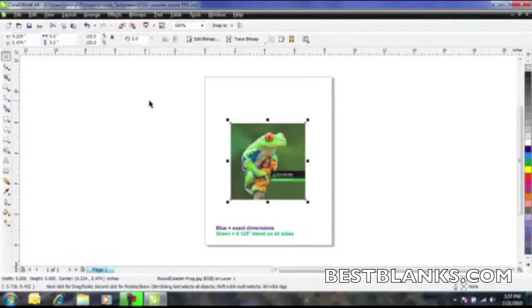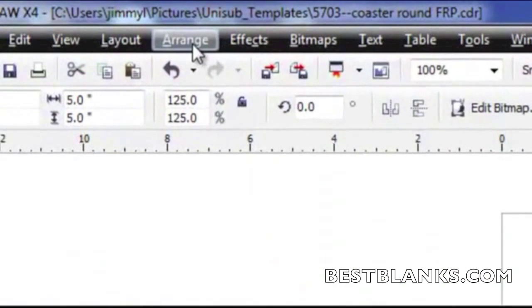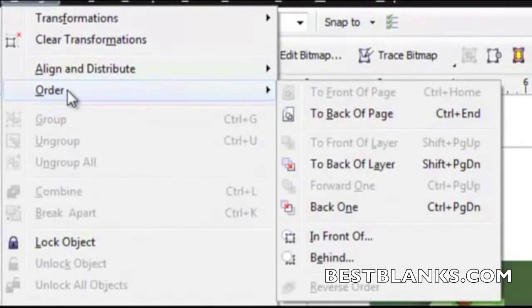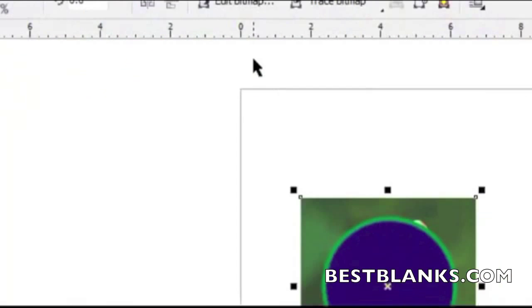The third step is to move the artwork behind the template for processing. Click on arrange, then click on order, and then click on to back of page.